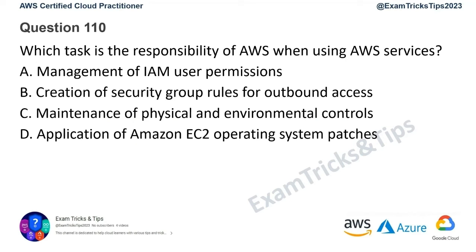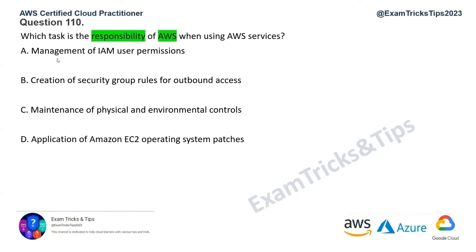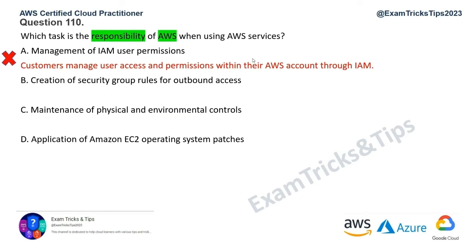Question 110: which task is the responsibility of AWS when using AWS services? This is a shared responsibility model question — security of the cloud is AWS's responsibility, while security in the cloud is the customer's responsibility. Management of IAM user permissions is a customer responsibility — customers decide who has access. Creation of security group rules for outbound access is also a customer configuration responsibility. So both options A and B are ruled out.